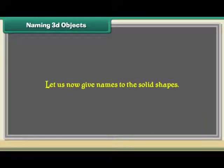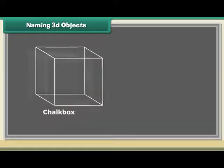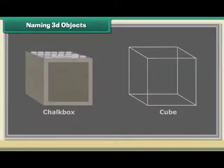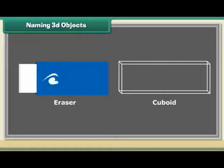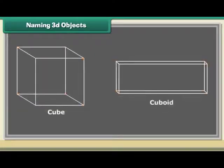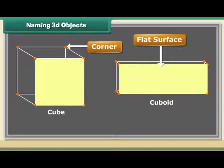Naming 3D objects. Let us now give names to the solid shapes. A chalk box is a cube. An eraser is a cuboid. Both cube and cuboid have corners and flat surfaces.